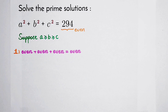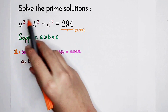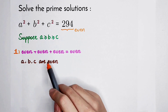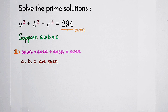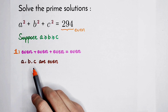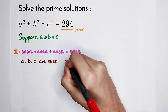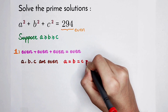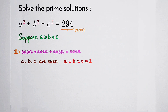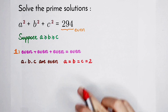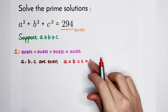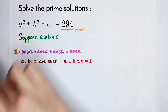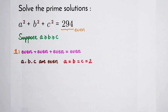Since a, b, and c are all prime and all even, and there is only one even prime number — which is 2 — that means a, b, and c must all equal 2. Therefore a squared plus b squared plus c squared equals 3 times 4, which is 12. But 12 is not equal to 294, so this case is wrong.